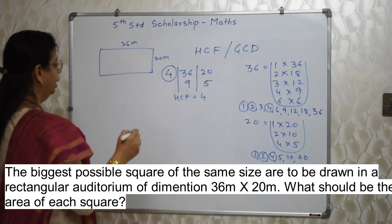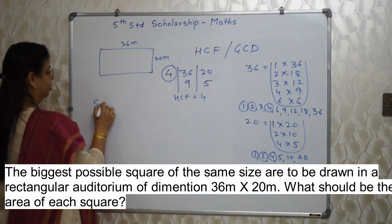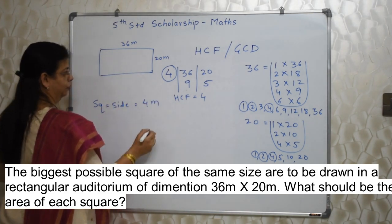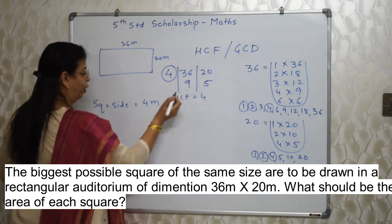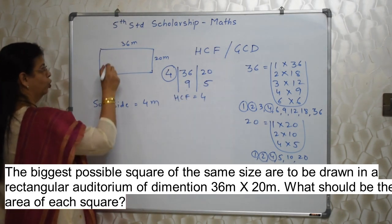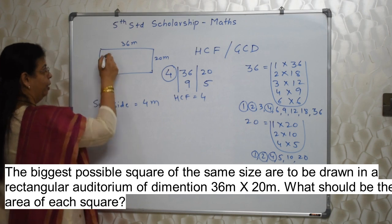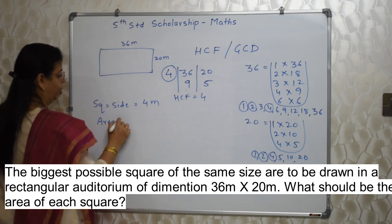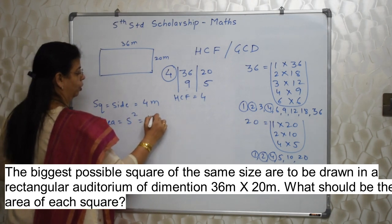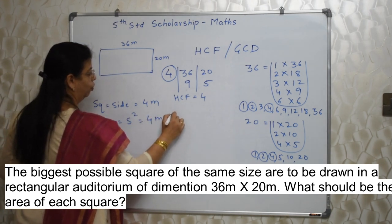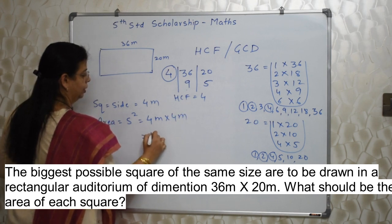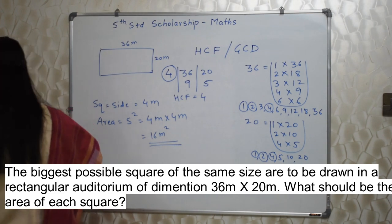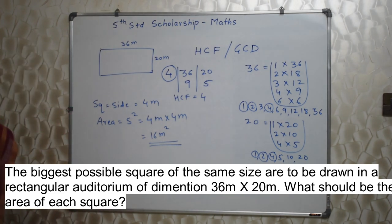What does it mean? Each square's side will be 4 meter. From this HCF we have found out the side of those small squares which we will be drawing. So what is the area? Area of any square is side squared — so 4 meter × 4 meter = 16 meter square. This is the answer to what they are asking us: area of each square is 16 m².